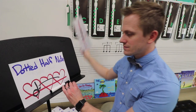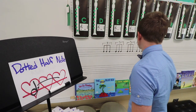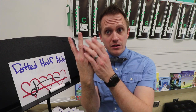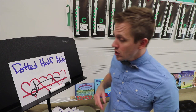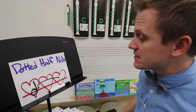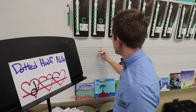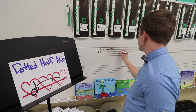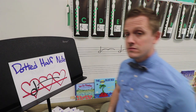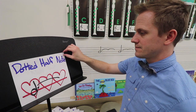Our next symbol of notation is a dotted half note. Take a normal half note — it gets two beats, half of a four-beat measure. But if you add a dot to any note, it adds half the value of that note. So a half note gets two beats; half of two is one; two plus one is three. A dotted half note looks just like a half note but with a dot next to it, and it lasts for three beats.